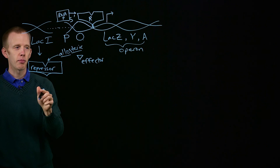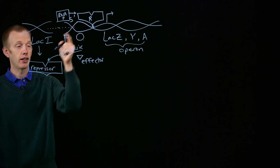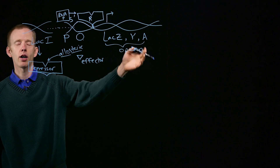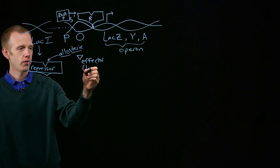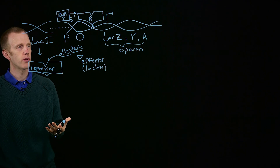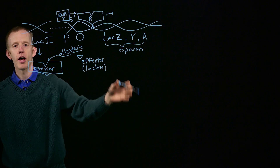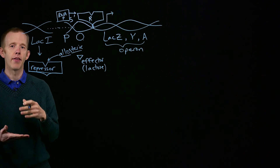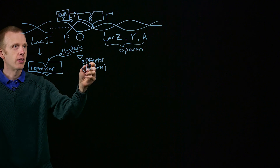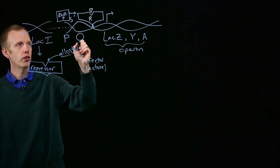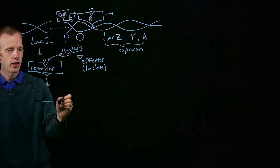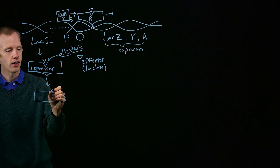The question is: what happens when an effector molecule binds lac repressor? What would be really useful for the bacterium is to turn on lacZ, lacY, and lacA genes when lactose, a sugar, is present and can be used as an energy source. LacZ, lacY, and lacA are genes that help bacteria take up and metabolize lactose. When lactose is present, it binds to lac repressor and changes the shape of that protein so it no longer binds DNA.